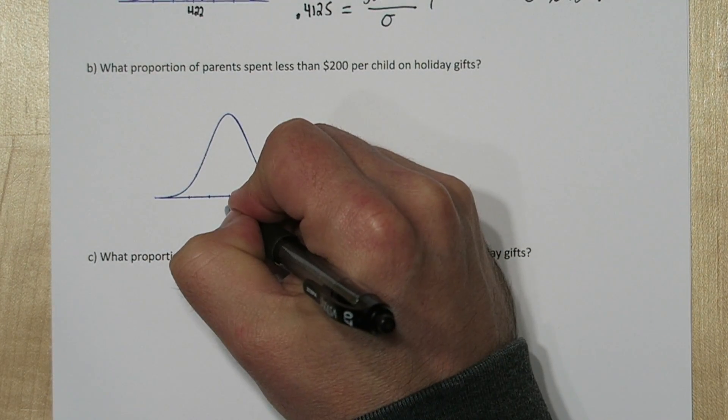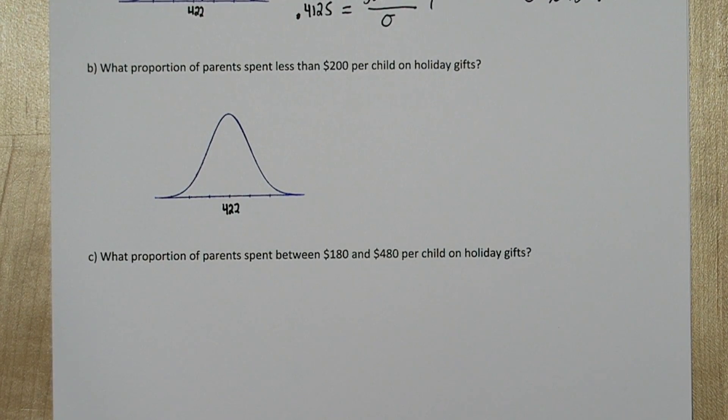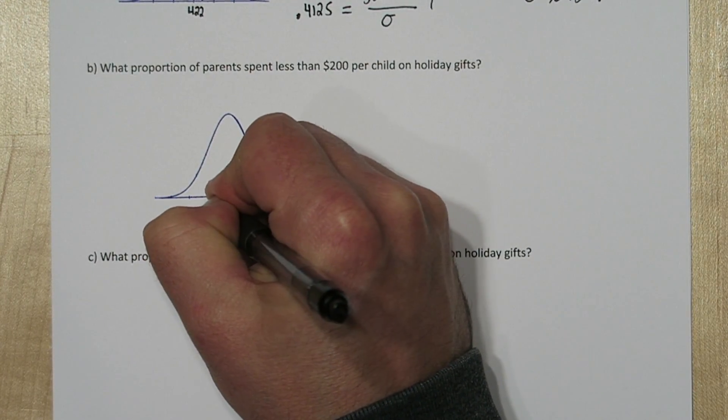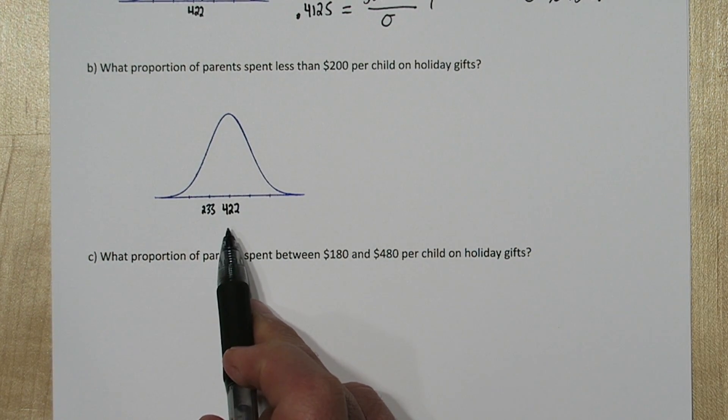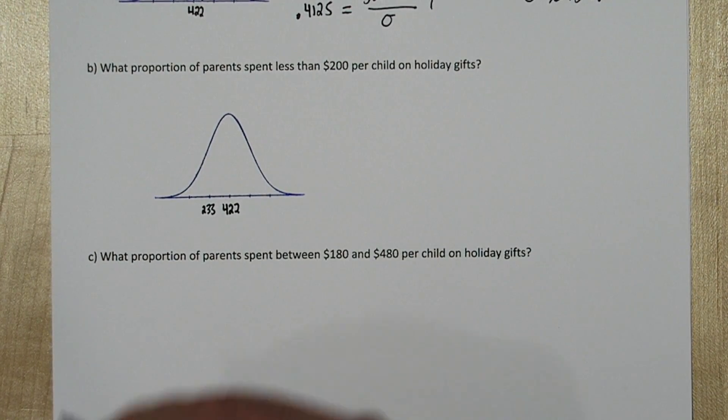We know the middle of our distribution is at the mean, $422. If we go one standard deviation to the left, we're at $233. We got that by taking 422 and subtracting our standard deviation, which is about $189. So where would $200 be? Maybe about here.